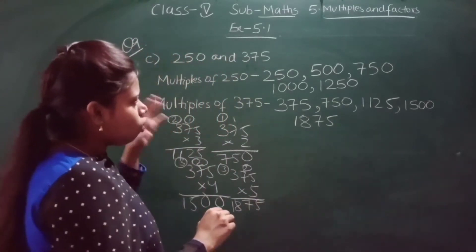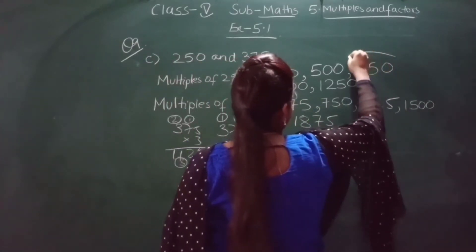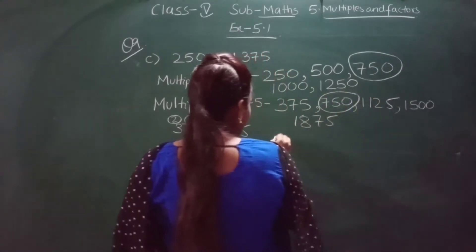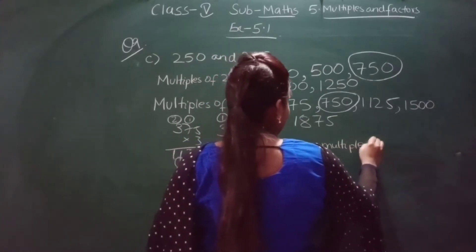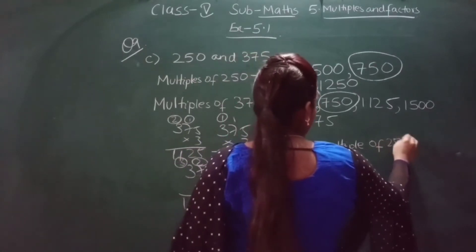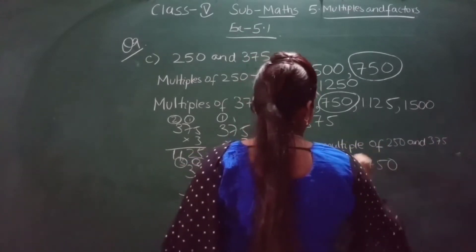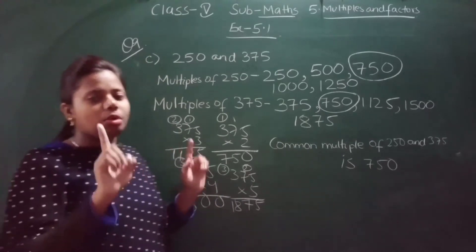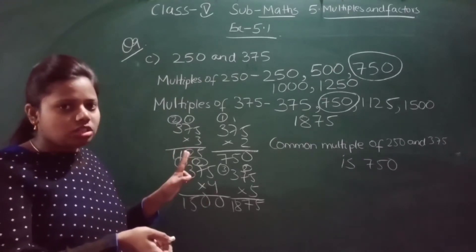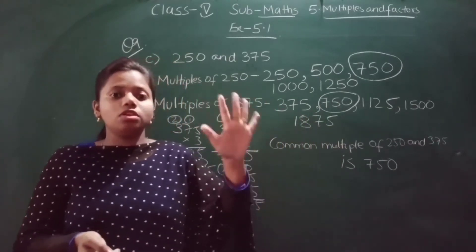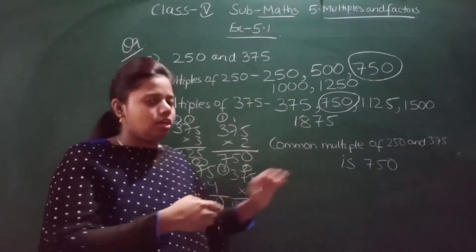Now let us see if any common multiple is there. Looking at both lists, 750 is common. So the common multiple of 250 and 375 is 750 — we got only one common multiple. In the same way, you will do the other two sub-questions. Those are smaller numbers, so you can write their tables directly. Write the first 5 multiples and find the common multiples.